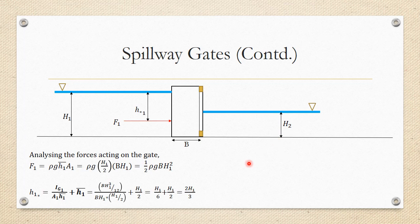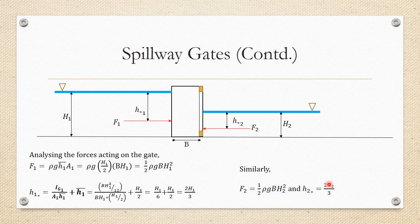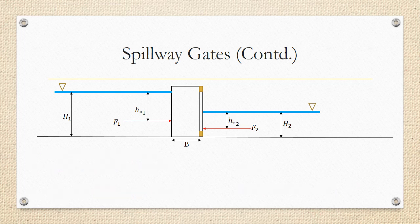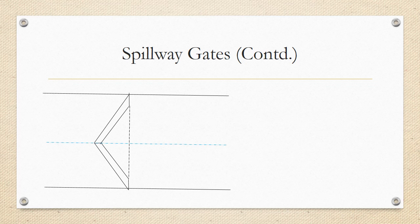Similar calculations for the downstream side: the water column has height H2, so F2 = ½ρgbH2² and H2* = 2H2/3. This is because the downstream side can also be treated as a vertically submerged surface of depth H2. The net force on the gate is given by F1 − F2.